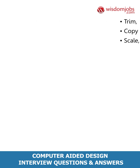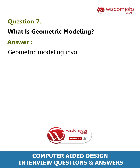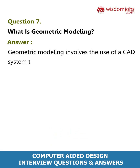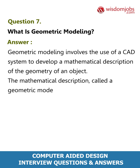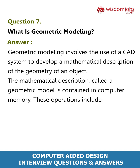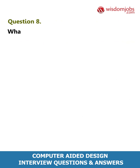Question 7: What is geometric modeling? Answer: Geometric modeling involves the use of a CAD system to develop a mathematical description of the geometry of an object. The mathematical description, called a geometric model, is contained in computer memory. These operations include creating new geometric models from basic building blocks available in the system.